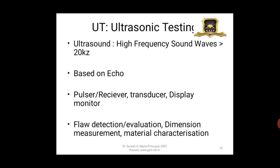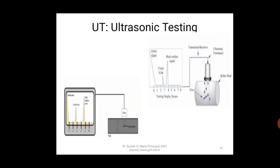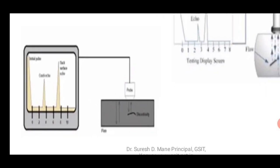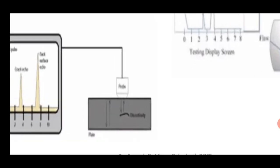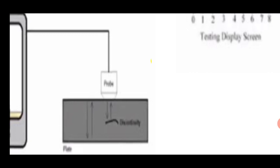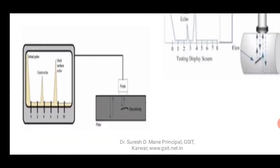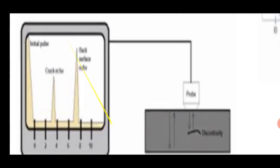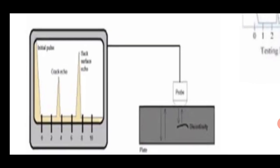This can detect flaws, evaluate metal thickness, measure pipe wall thickness, and characterize material. In the diagram, the extreme left is the CRT monitor, the black shape is the work piece being tested, and the pulse generator or transducer is shown. There are two echoes — the initial pulse on the left and the back echo on the right — and the CRT is calibrated based on the metal thickness. In case there is a flaw,